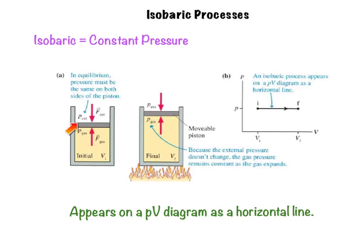So when that piston is at equilibrium, the pressure is going to be the same on both sides of the piston. We add heat energy into that gas, then because the external pressure outside the piston doesn't change, the gas pressure remains constant as that gas expands and moves that piston up. So the motion of this piston involves work.